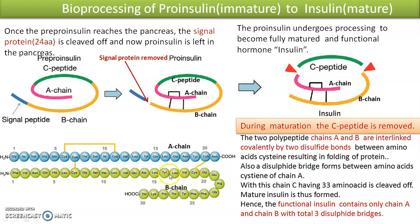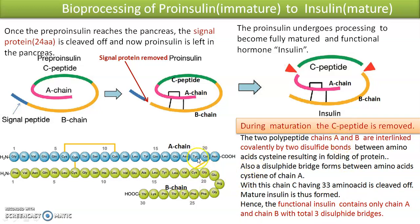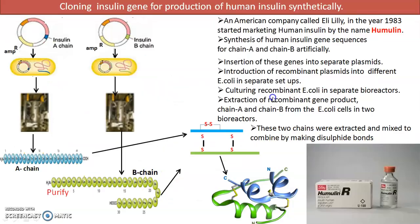Two disulfide bonds are formed between chain A and chain B. There is also one additional disulfide bond within chain A, between the sixth and eleventh cysteine amino acids. With these three disulfide bridges, the A and B chains are linked together, and the C chain is cleaved off — forming mature insulin. Mature insulin contains only chain A and chain B with three disulfide bridges, for a total of 51 amino acids (21 + 30).